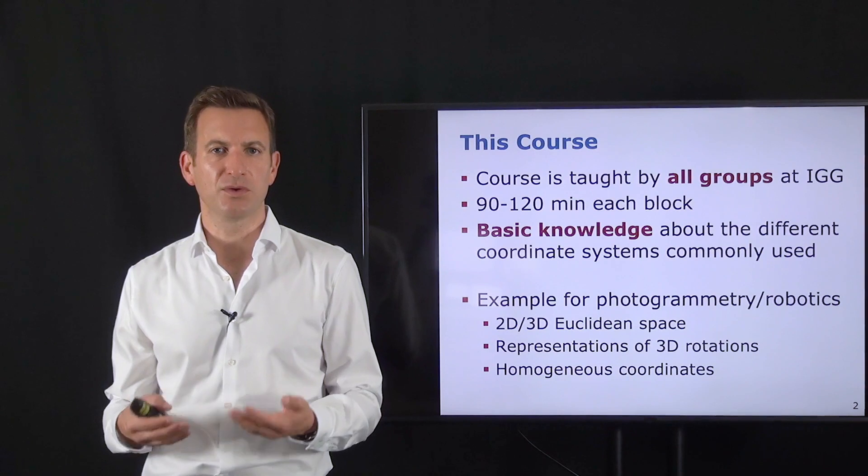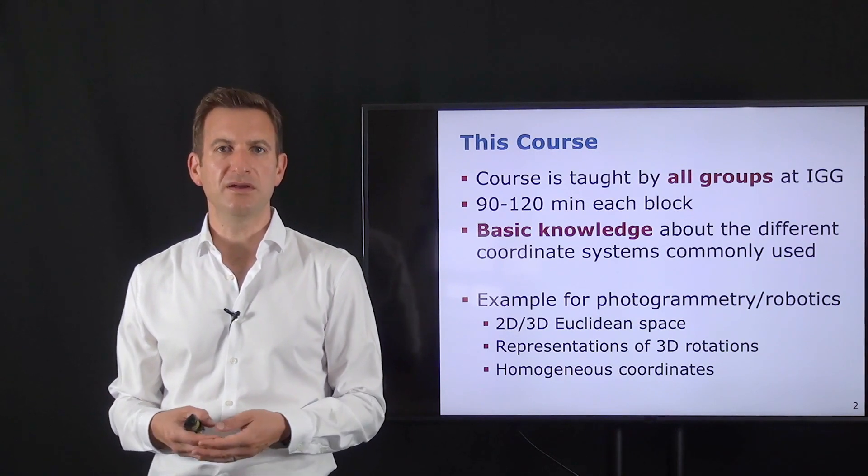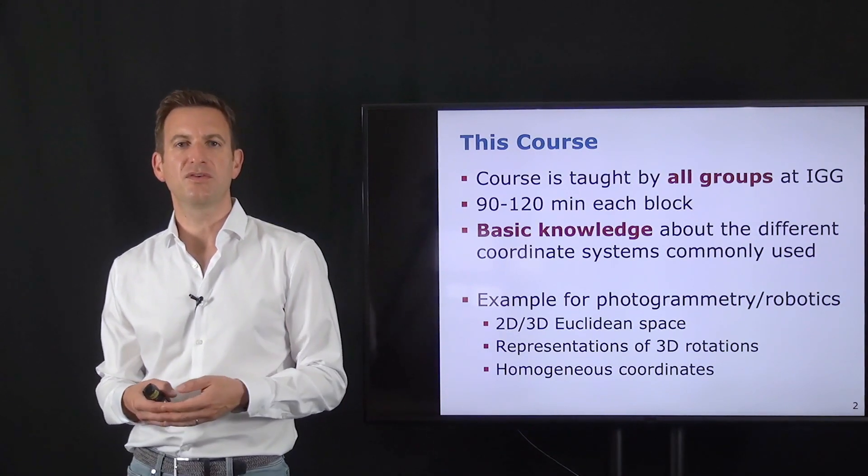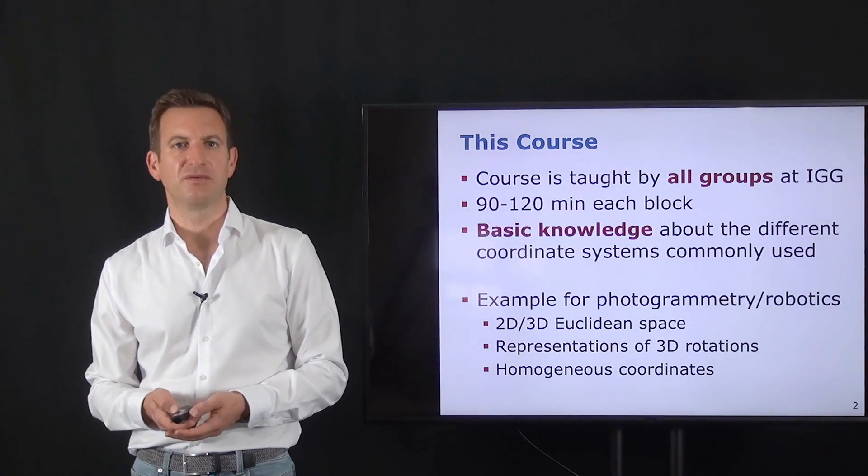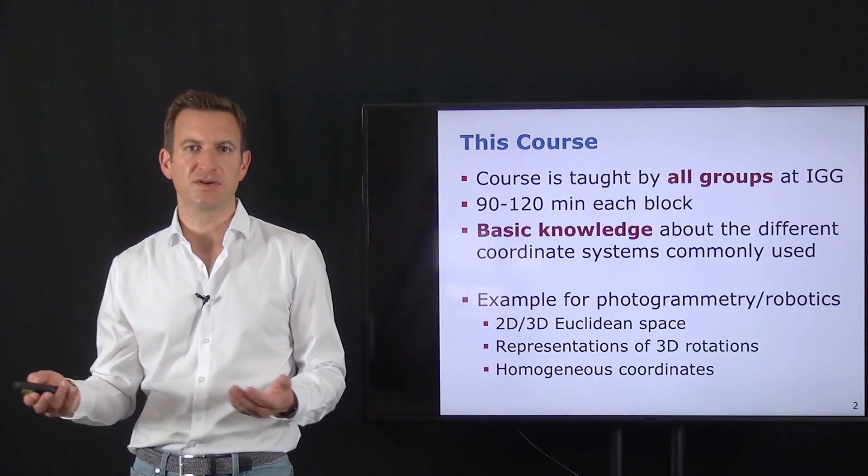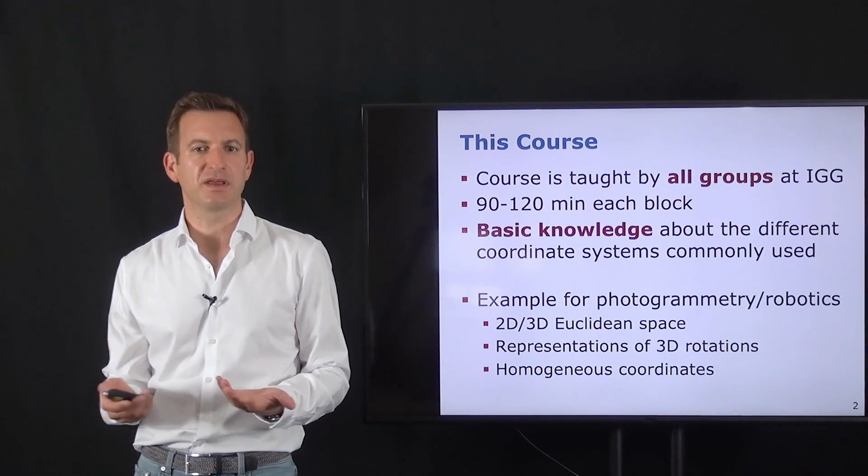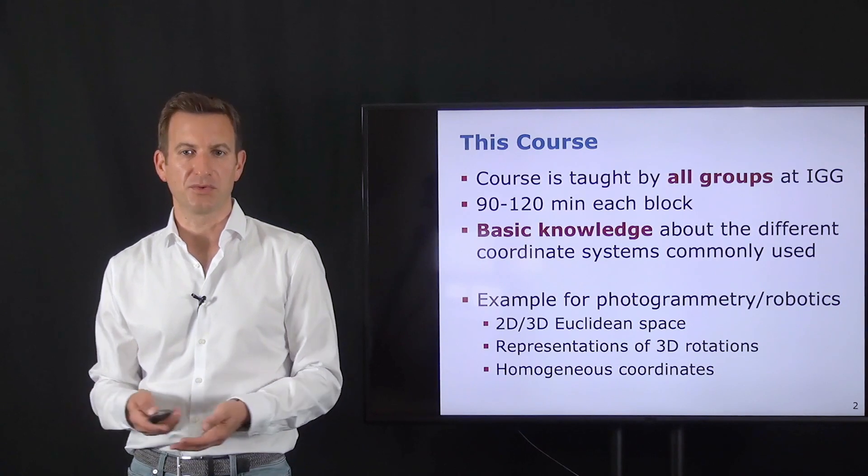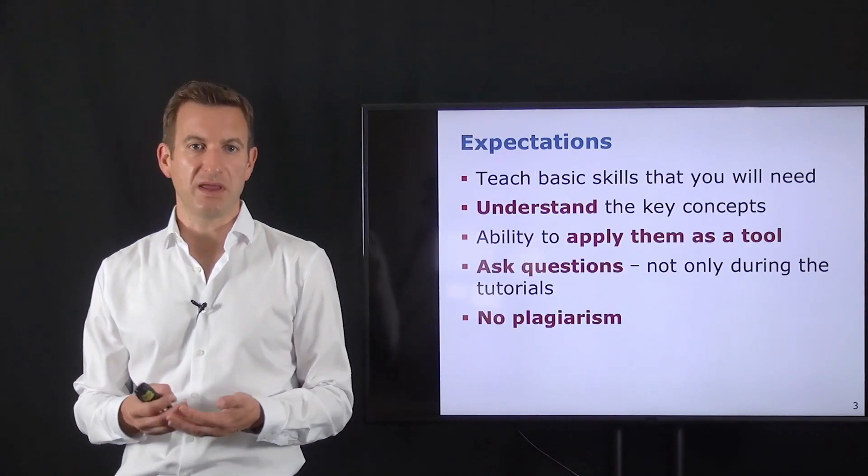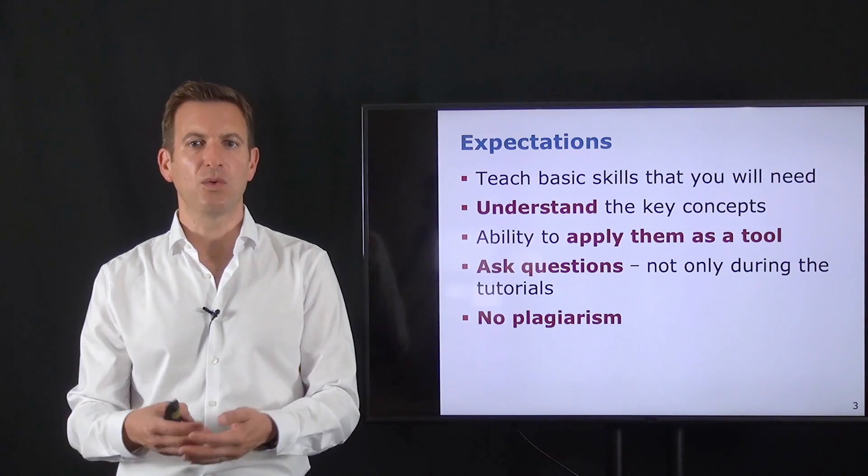It's an alternative coordinate system to the Euclidean space or Euclidean coordinate system that allows us to do certain things in a much more elegant way and therefore it's very common in photogrammetry, computer vision, but also in robotics and one of the key tools that you need in order to go through your study program.